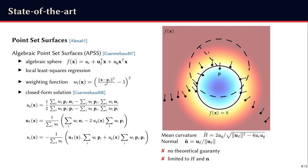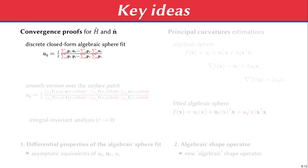And here are the key ideas. First, to obtain some guarantees on tilde h and tilde n of the APSS, we will not consider the discrete closed form expression of the algebraic sphere fit, like this one for the parameter uq. Instead, we consider a smooth version, as done in the integral invariant analysis. So each discrete sum is replaced by a smooth integral over the surface patch, and the positions of the point pi are replaced by the height field function f that we saw earlier.